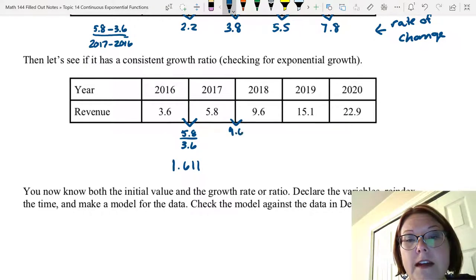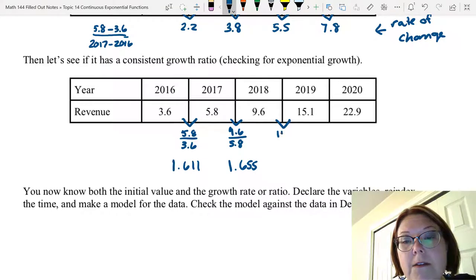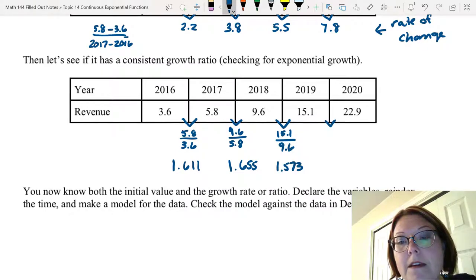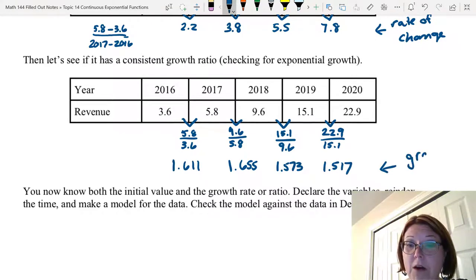The second set would be 9.6 divided by 5.8, which comes out 1.655. The next set would be 15.1 divided by 9.6, which is 1.573. Then 22.9 divided by 15.1, which is 1.517. Now these growth ratios are much closer together than the rate of change calculations were. For this reason, it seems more likely that the data is exponential than that the data is linear.